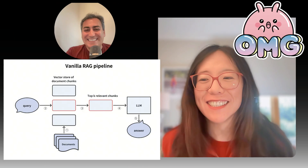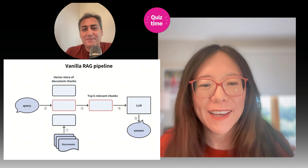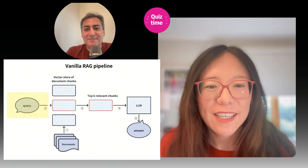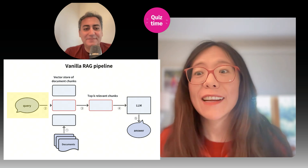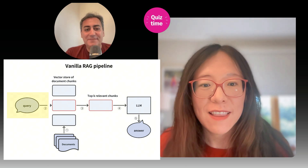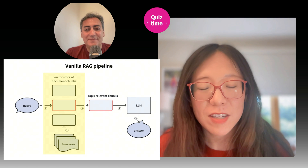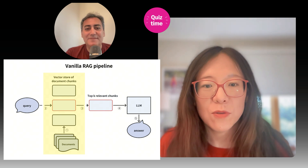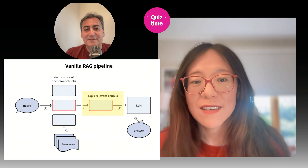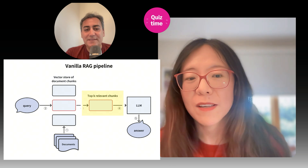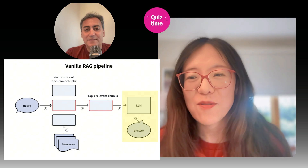Oh, my goodness. Alright. So the user has a query, and then you have a bunch of documents that you can refer to in order to find the answers. And then you chunk the documents into document chunks. And then you retrieve the top K relevant chunks from the relevant document library. And then you pass that to the LLM and answer the question.